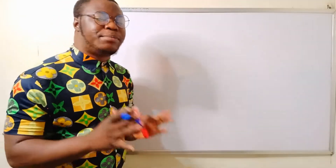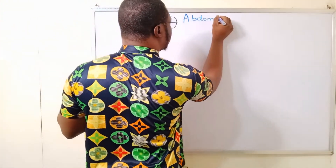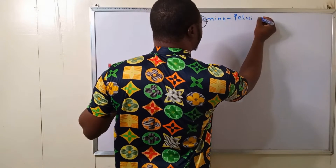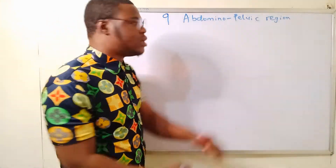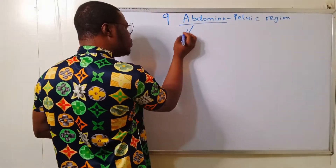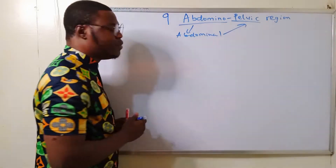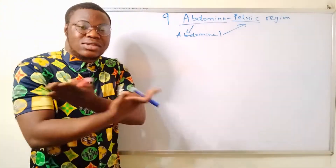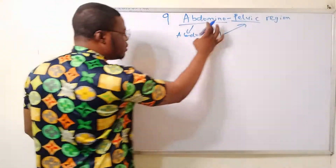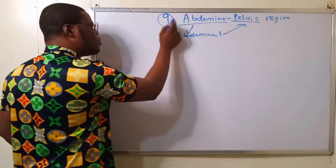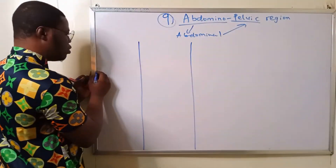Welcome back. We're talking about the nine abdominopelvic regions. They combined these two cavities — the abdominal cavity and the pelvic region — because they are actually continuous. There is nothing separating them, unlike the thoracic and abdominal cavities. They divided this abdominopelvic region into nine sections.